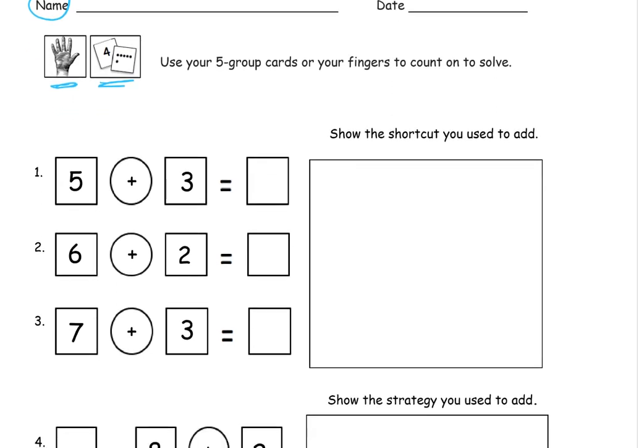Draw the shortcut you used to add. So you're either counting on with your fingers or you're drawing that out. If you're going to use the five group cards, the way you'd use the five group cards is you'd find the card with the five and the back of that card would look like this. One, two, three, four, five.